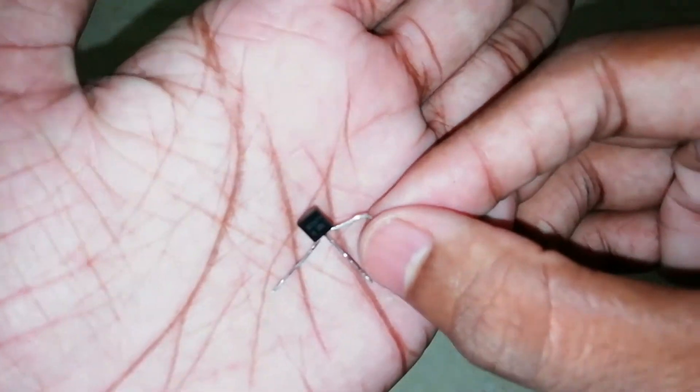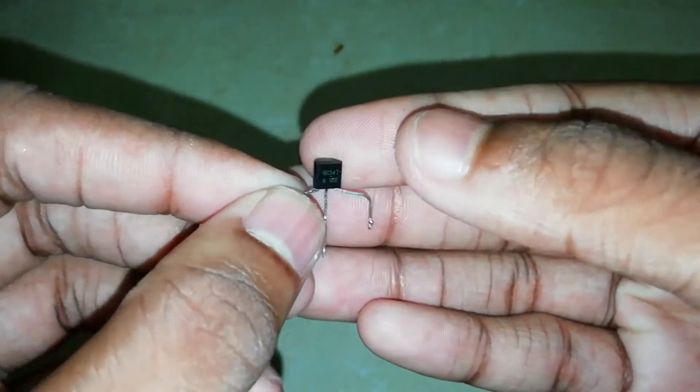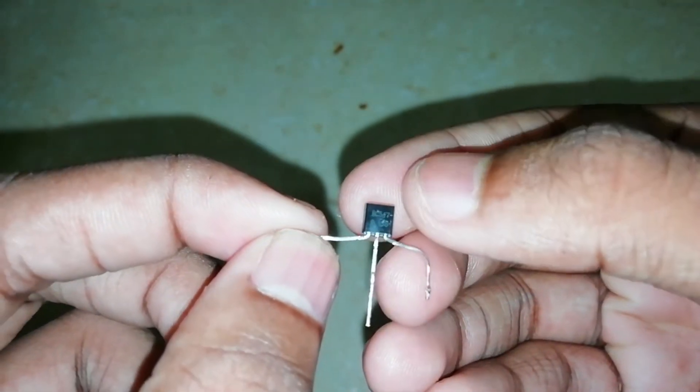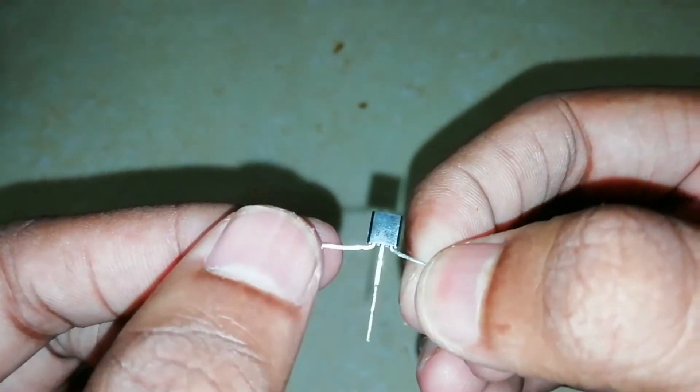Let's get a transistor. There are 3 pins in the transistor. This is the collector, base, and emitter.